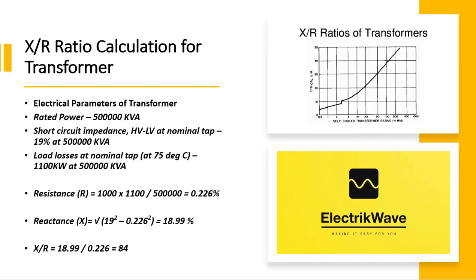Now let's calculate X by R ratio of transformer for the given electrical parameters. Rated power is 500 MVA, short circuit impedance between HV and LV winding at nominal tap is 19% at 500 MVA. Load losses at nominal tap and at 75 degrees Celsius is 1100 kW at 500 MVA. X by R ratio depends on load losses, rated power, and impedance value, and the X by R ratio is 84 for these parameters. No load losses has no effect on X by R ratio.